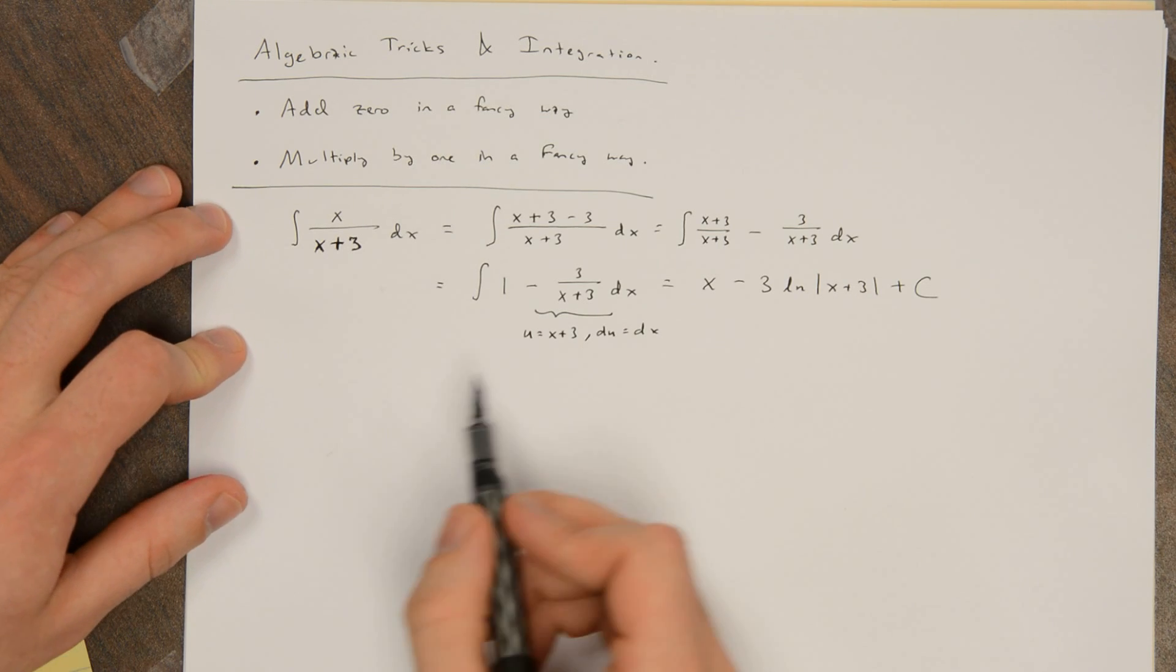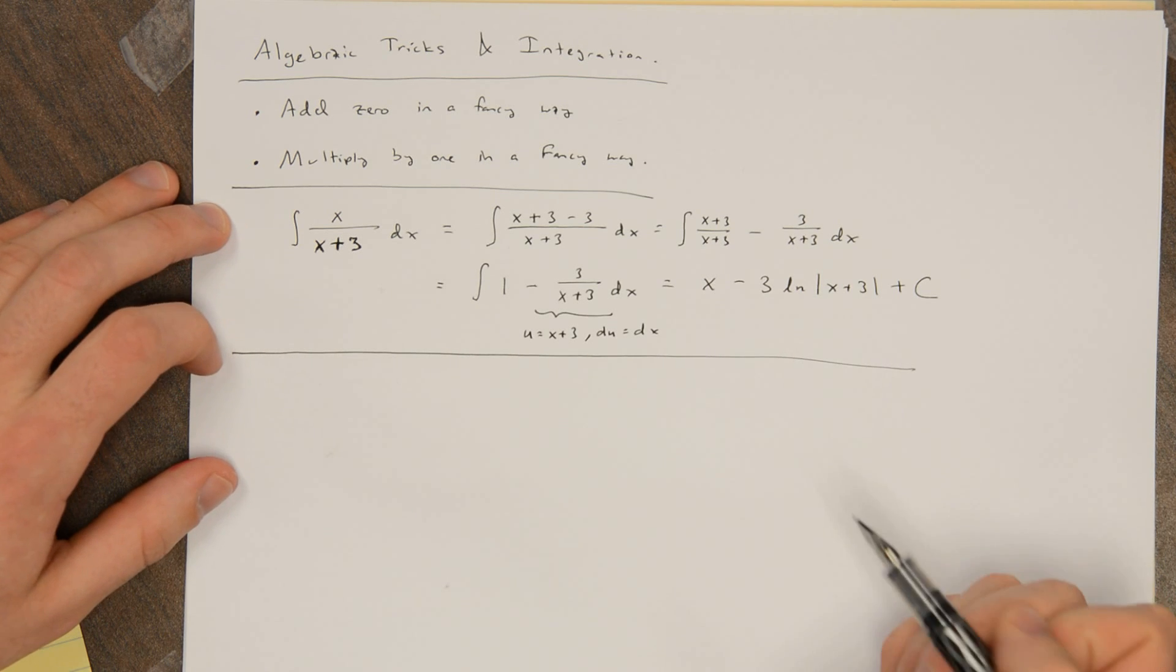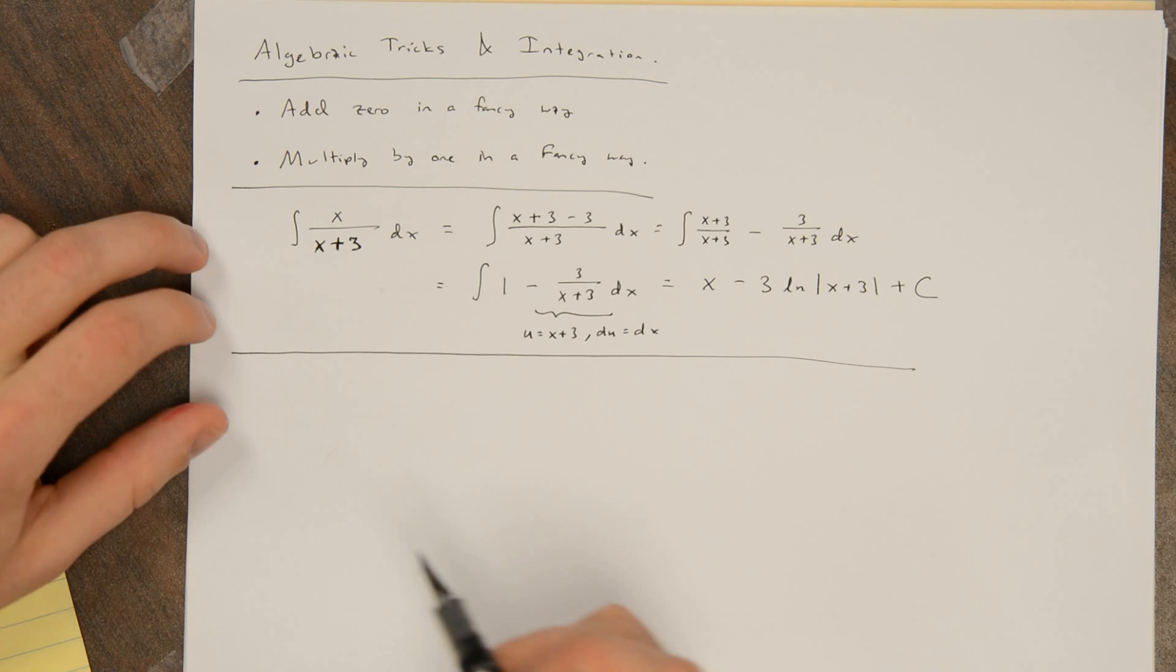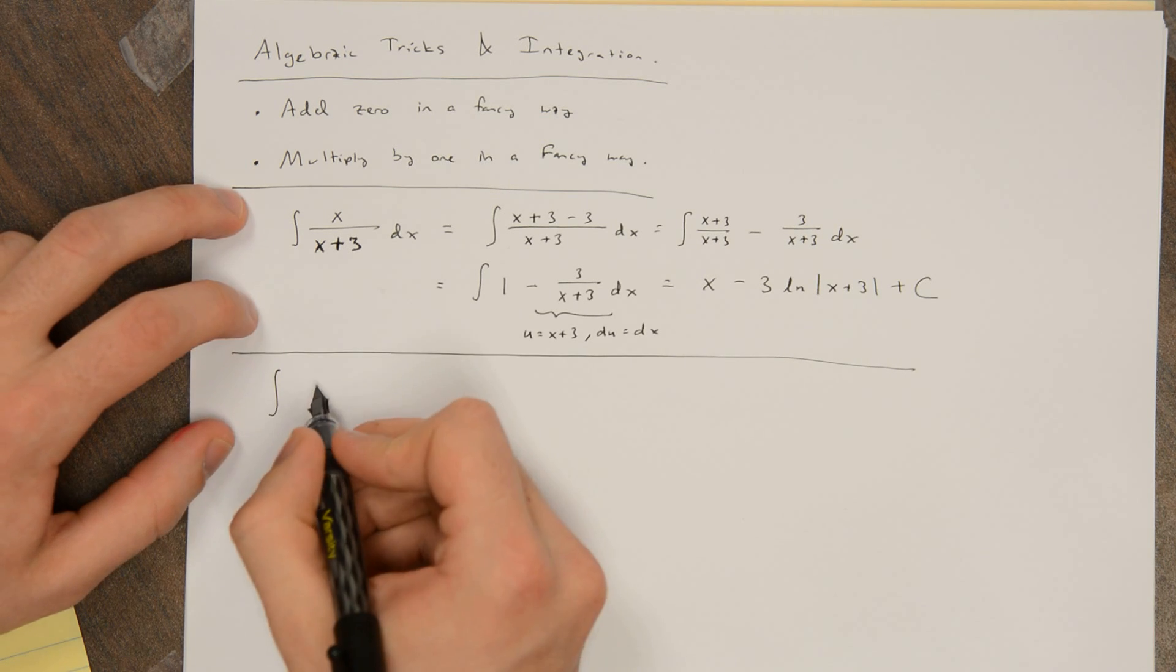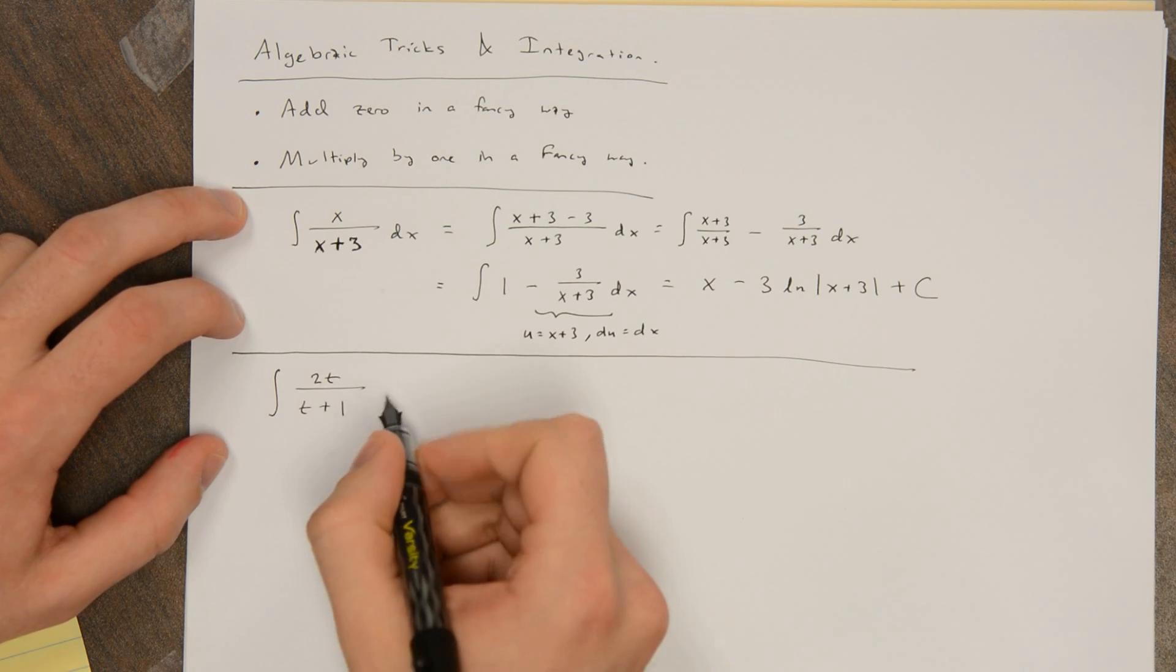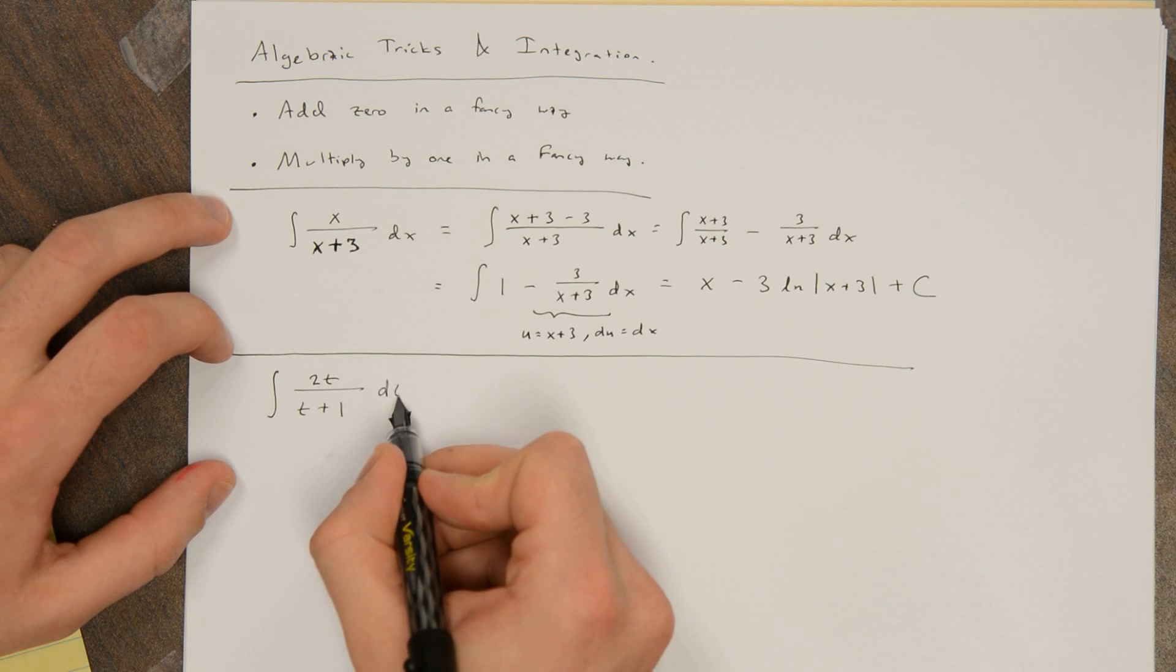So there are other ways to do this integral, but it's faster to do it this way. You could also do this for something like the integral of 2t over t plus 1, that I wish I had a multiple of t plus 1 in the numerator.